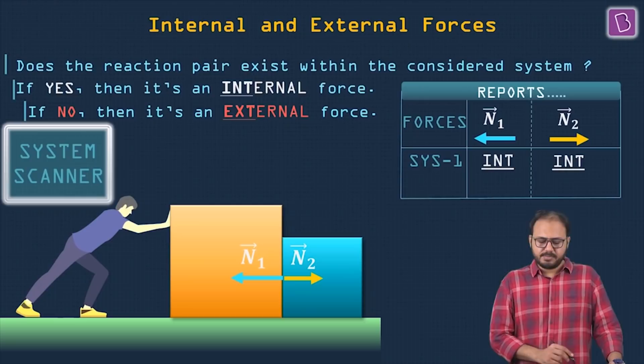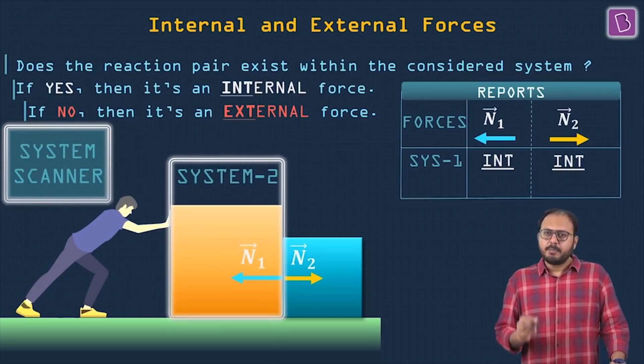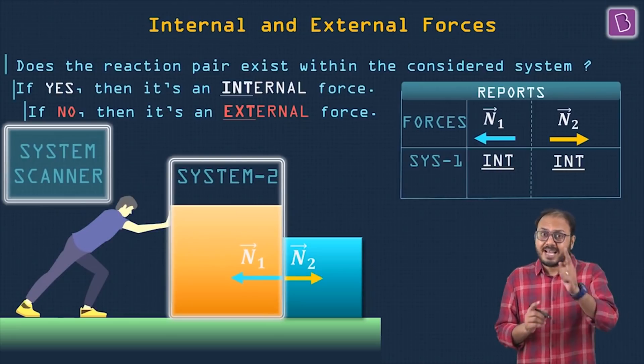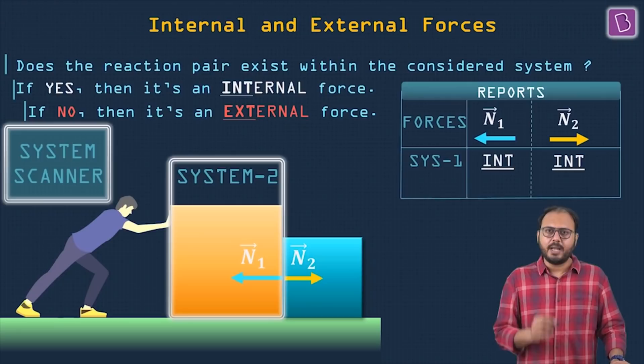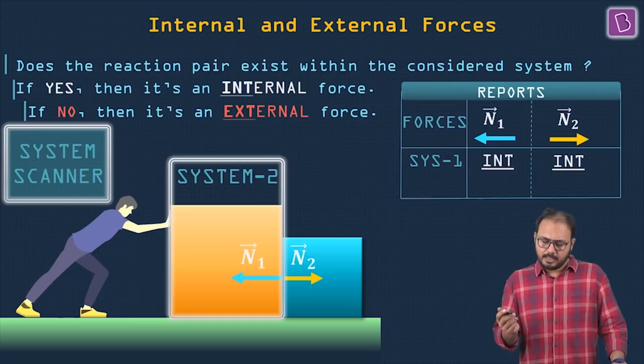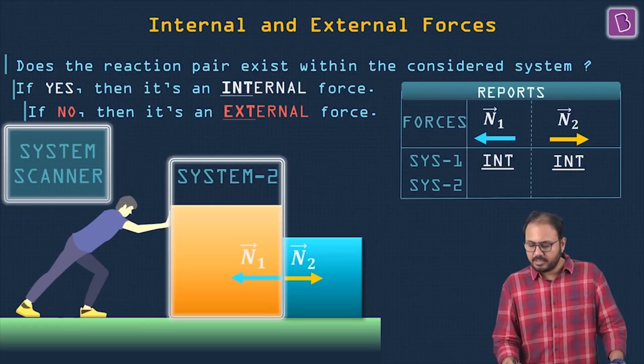Let's go next choice. System scanner activated again. Watch what happens now. This time, my system two, second choice, only has block one. N1 is my question. Is N1 internal or external? Is the reaction pair of N1 in my system? No sir. Then N1 in my second choice of system is an external force.